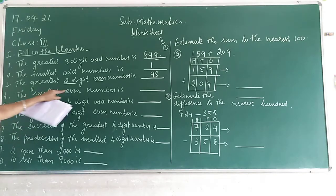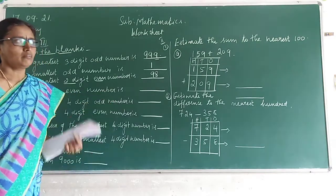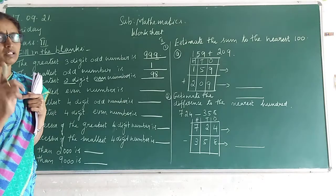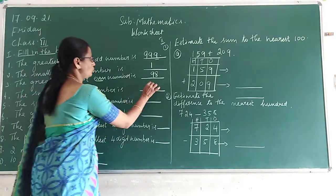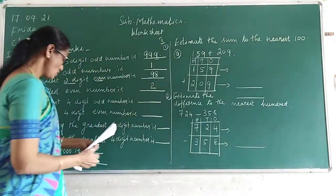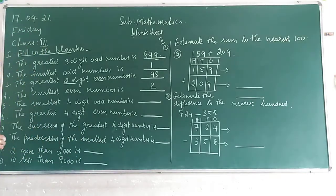The smallest even number is dash. What is the smallest even number? The smallest even number is 2. Next step.